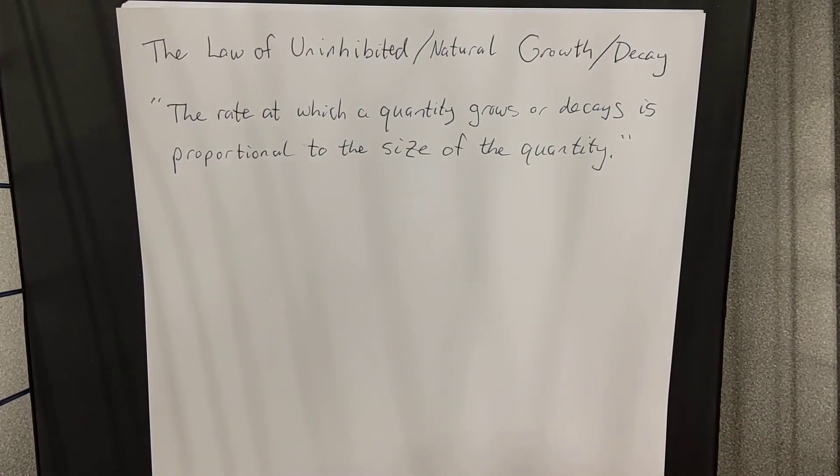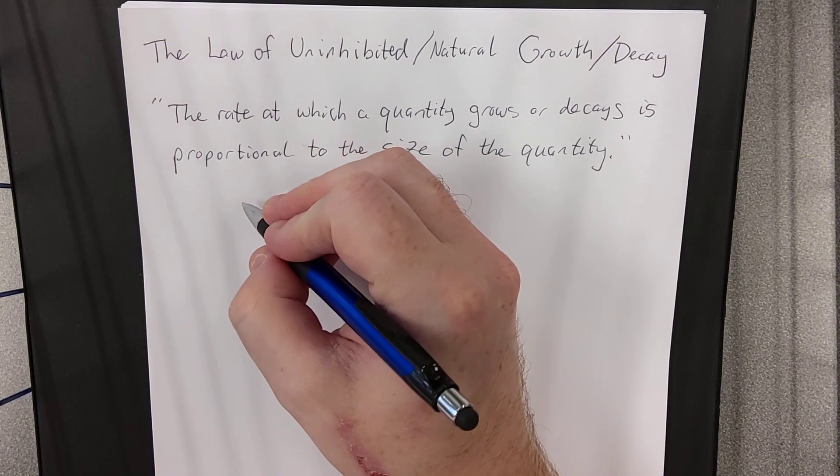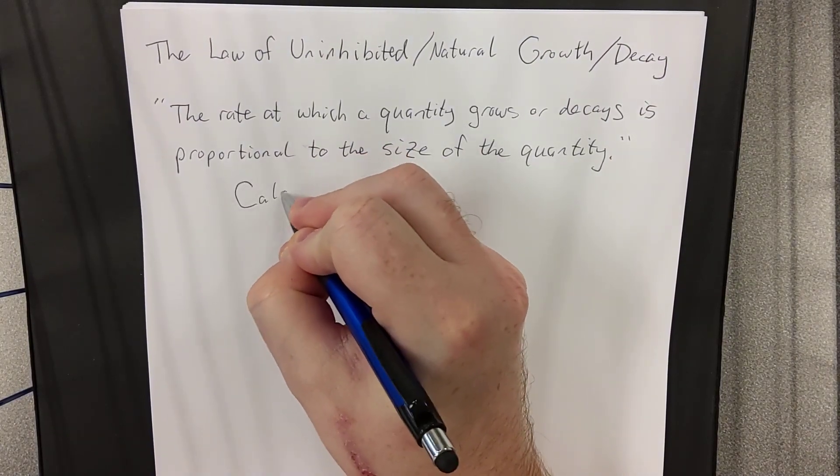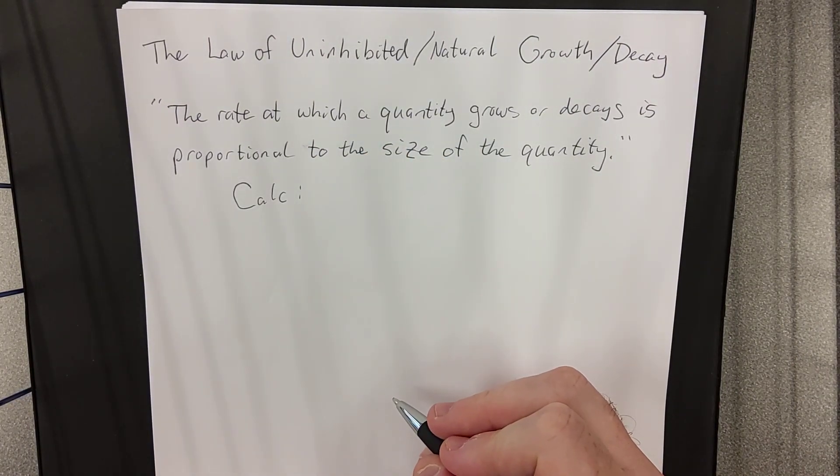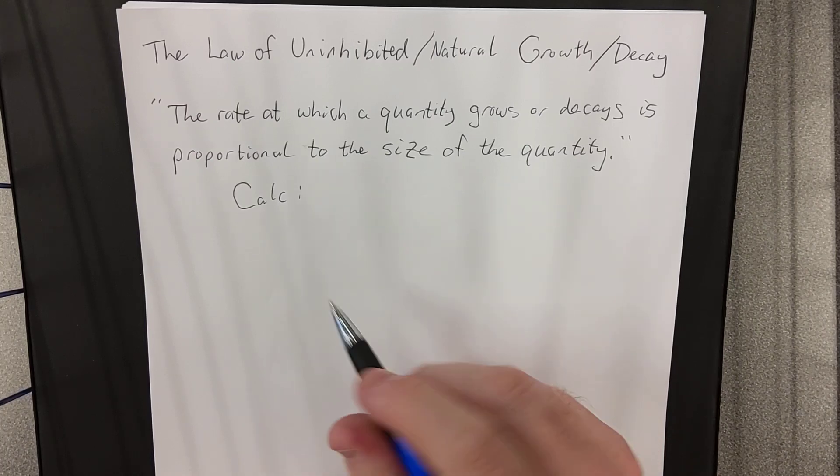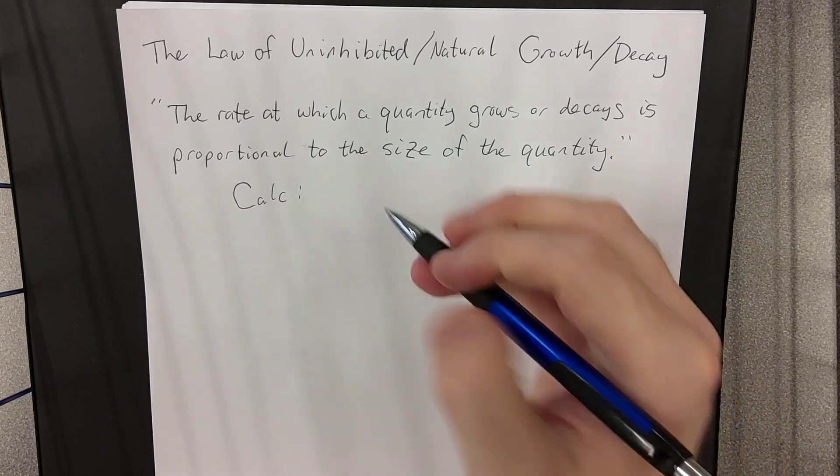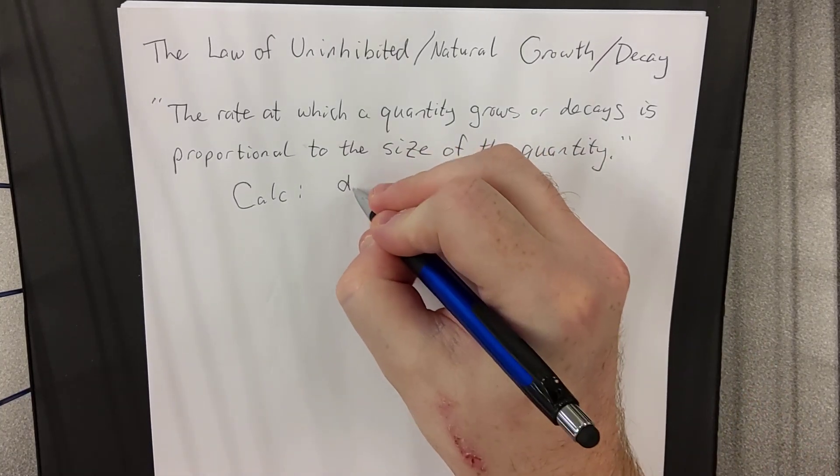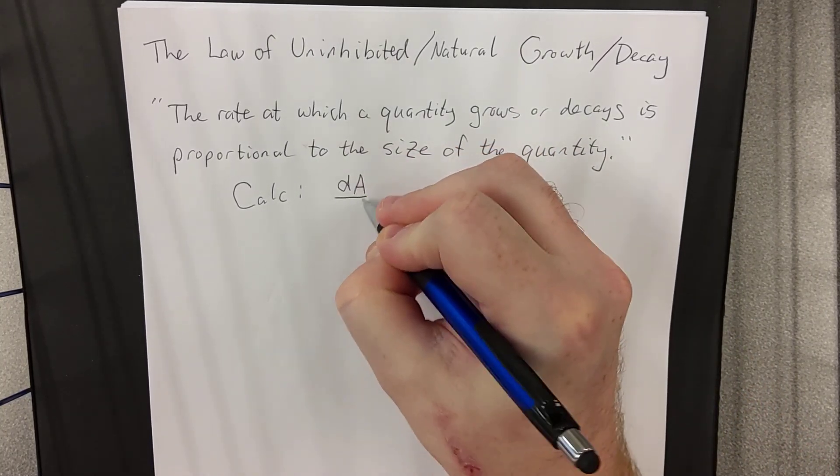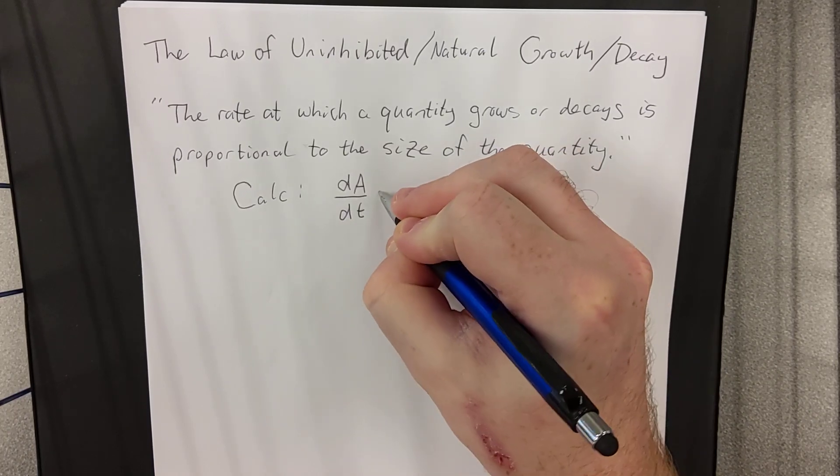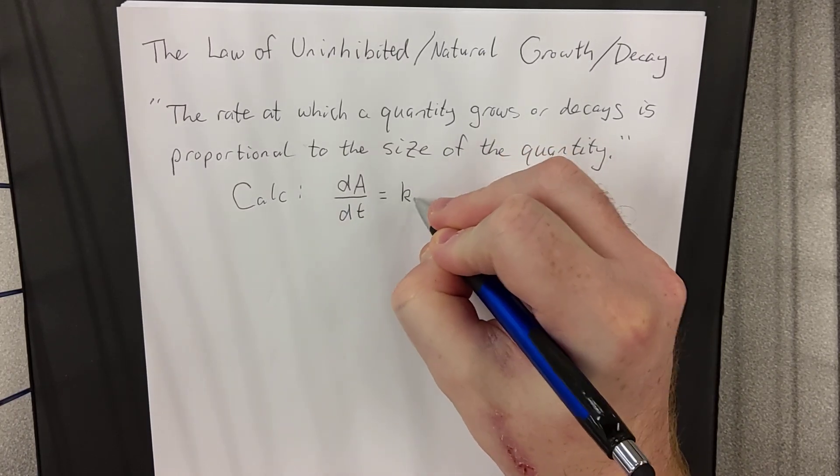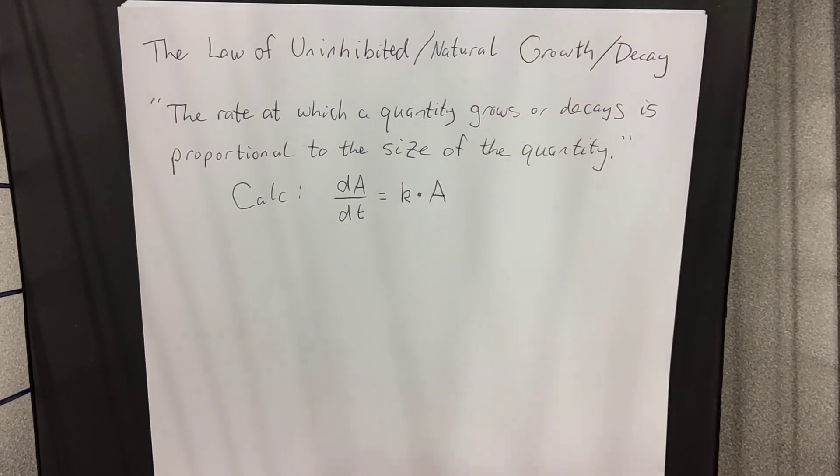Now, I don't expect pre-calculus students to have a good understanding of what I'm about to write, but there is a way to translate this into what's known as a differential equation. A differential equation is a particular branch of calculus that hopefully, with practice, you'll get to someday. So this states that the rate at which the size of an object changes is proportional to, proportional to means a constant times whatever that quantity happens to be.